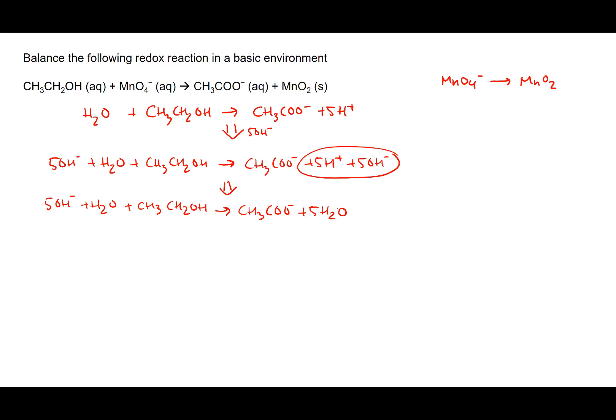That's our neutralized system. Now we can balance out the water molecules — we have one on the reactant side and one on the product side, so the one on the reactant side gets cancelled out. That brings the 5 water molecules on the product side down to 4.